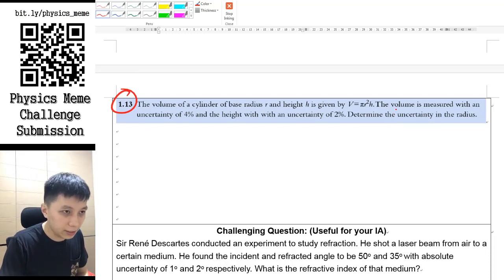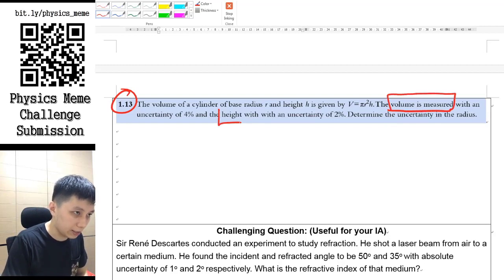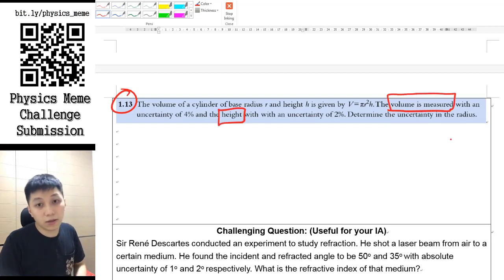So in this question, it said volume is being measured and also the height as well. The variable, or the parameter they want you to find out is radius, so that means radius is the one that being calculated. Being the process data.